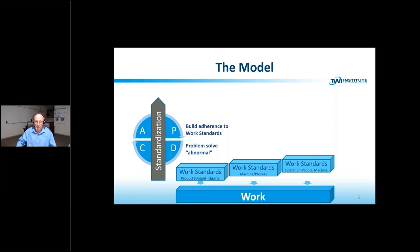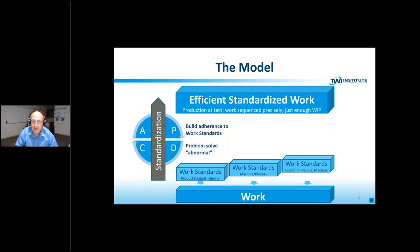Through PDCA, we go through the act of standardisation over much time, where we problem solve abnormal that we can identify from our work standards and we build adherence to those work standards. If we do that diligently enough and for long enough, we'll end up with efficient standardised work. Efficient standardised work is where production is at takt, in other words, the pace of production equals the pace of orders coming in. The work is sequenced precisely so we have maximum efficiency of people and machines. And we have just enough work in progress. In other words, we have just enough to keep the line or system working precisely and smoothly with no excess, nothing left over.